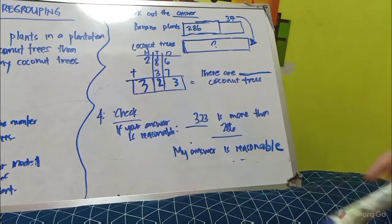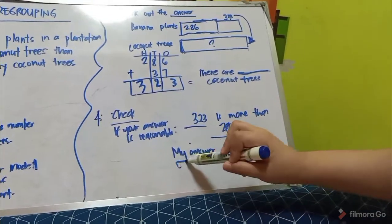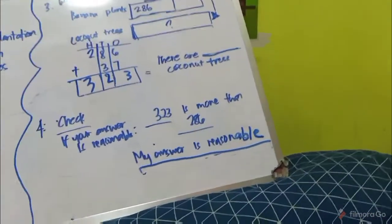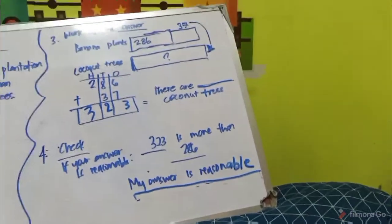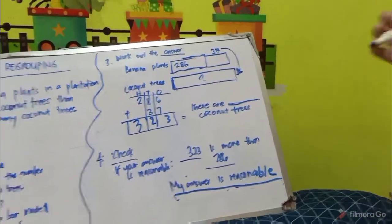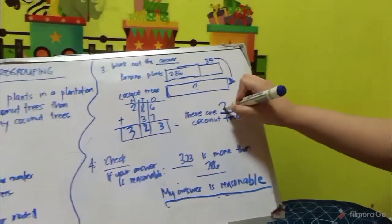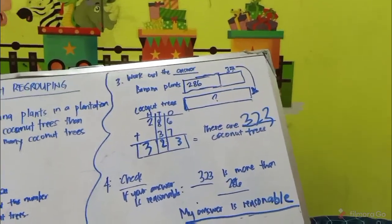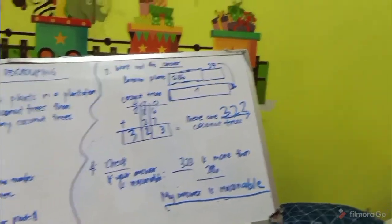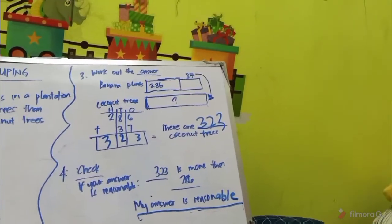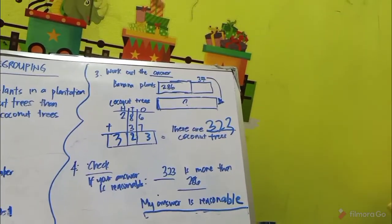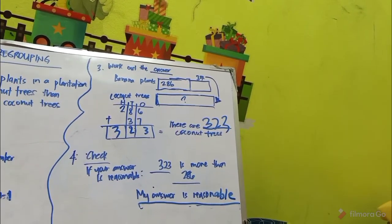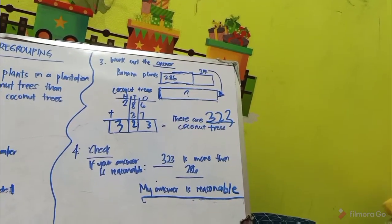So my answer is reasonable. That means I have 223 coconut trees. Bye.